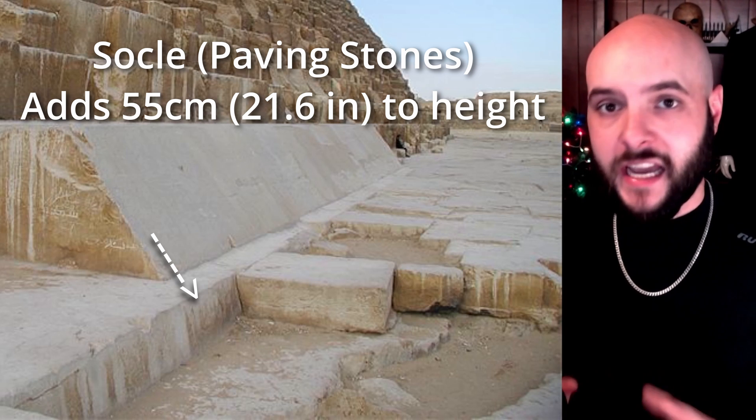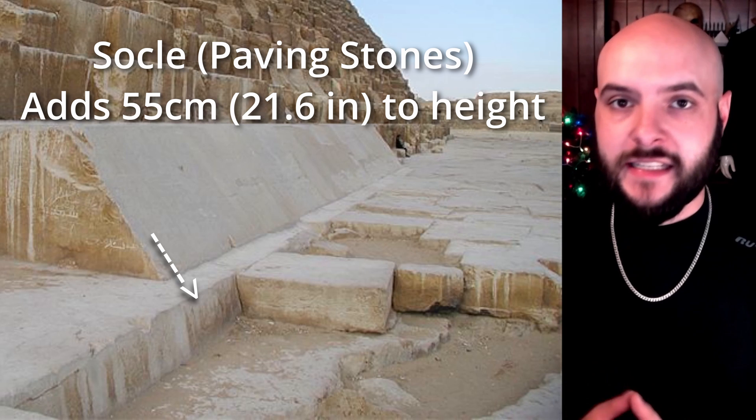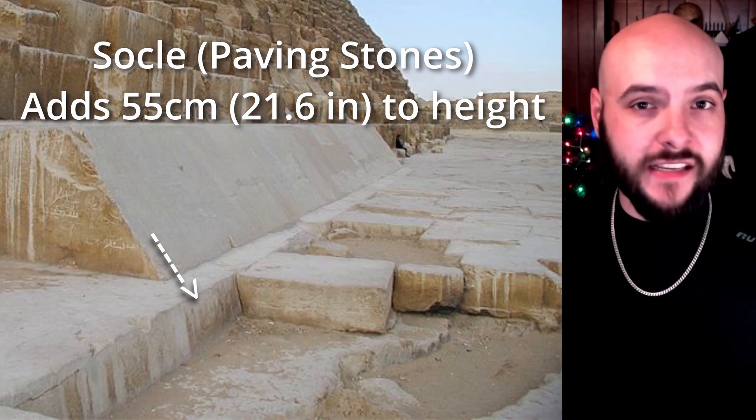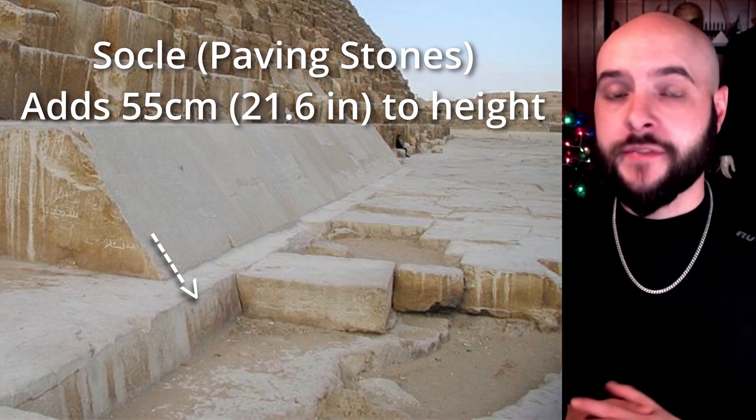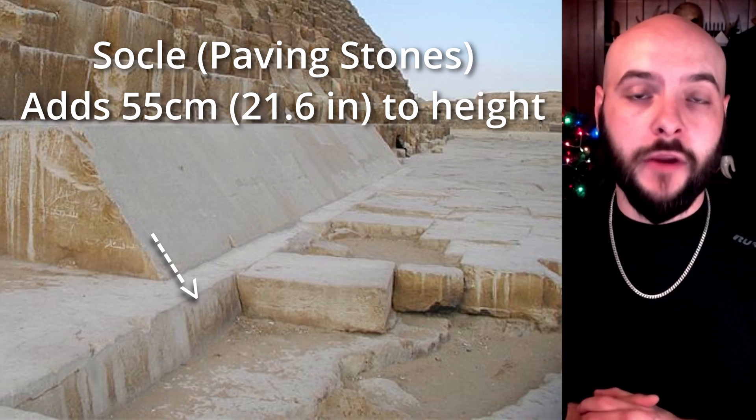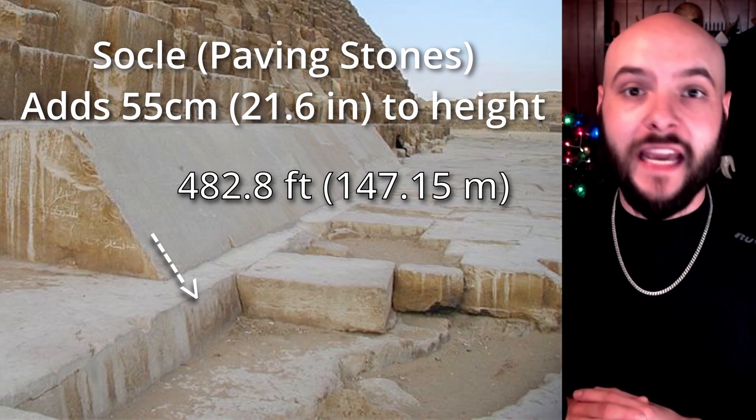Now before we get to the numbers, I gotta point out that the Great Pyramid does not sit directly on the bedrock. It sits on what is called the socle or paving stones, which raises the entire structure up 55 centimeters or 21.6 inches, giving the final height of the Great Pyramid to 482.8 feet high.